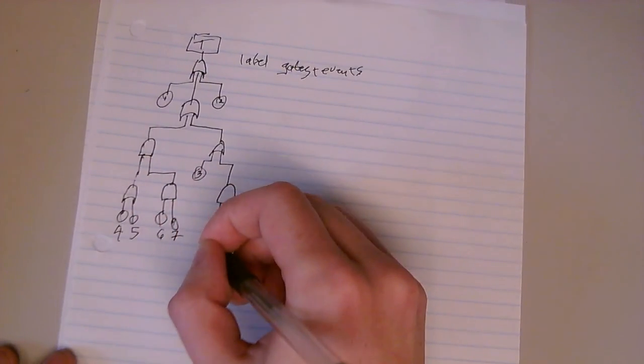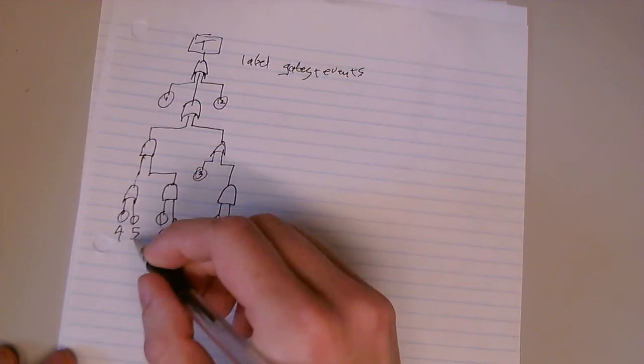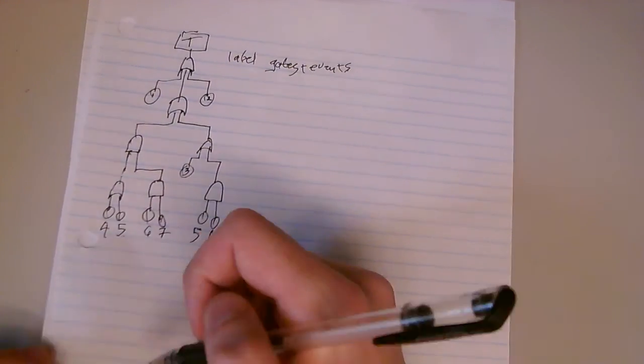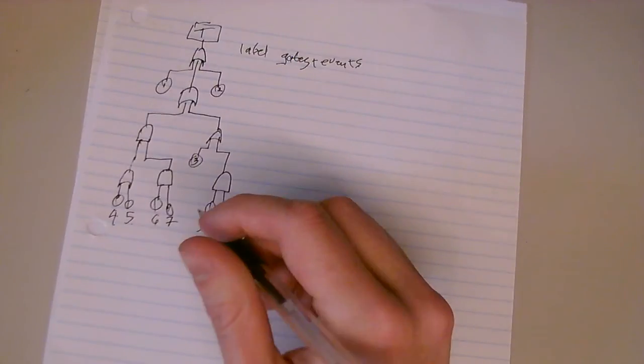And to make things interesting, 5 and 6. You'll notice that 5, 5, 6, 6, these are in duplicate. It's just the same event, but different gates triggering them.